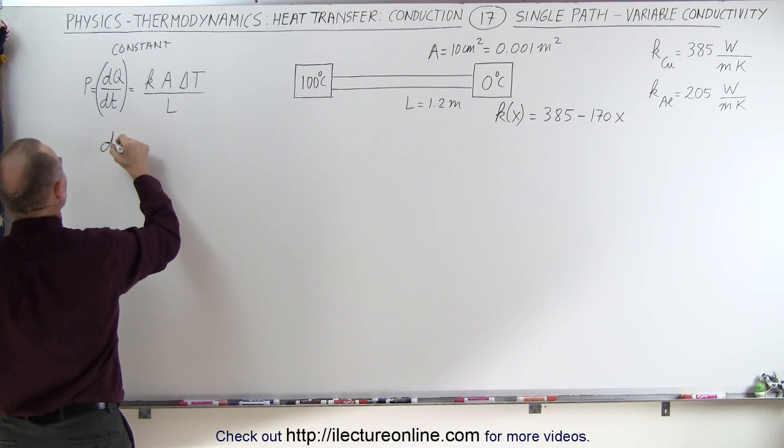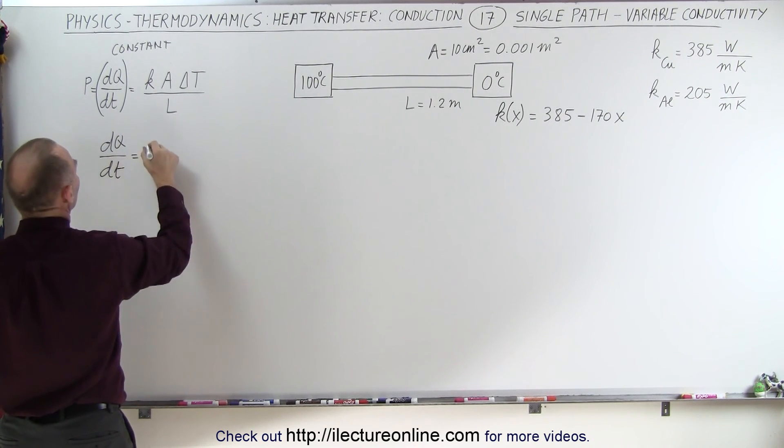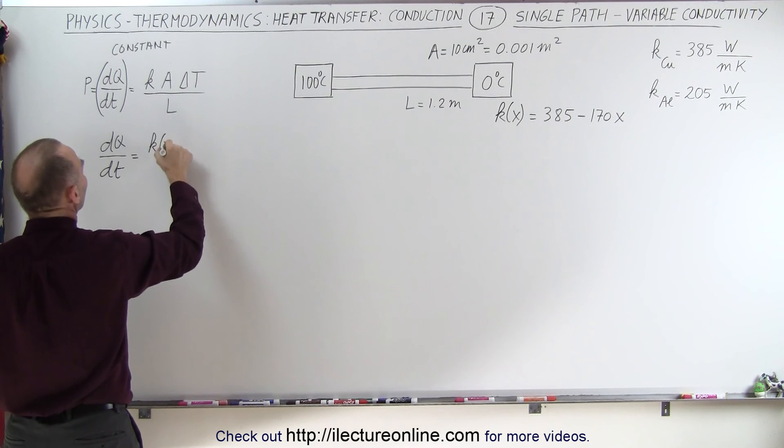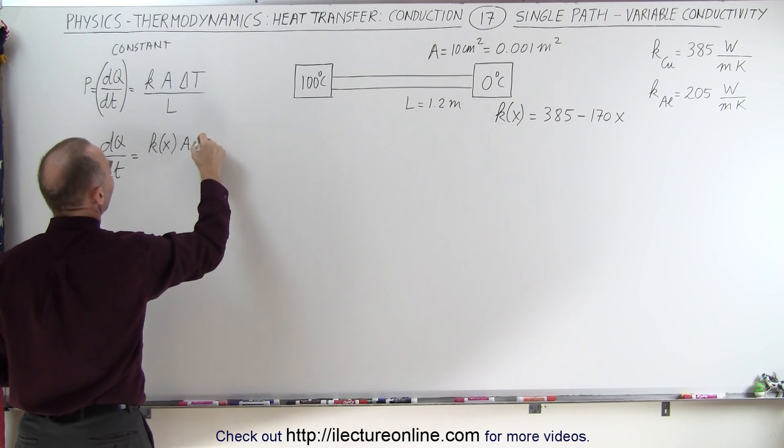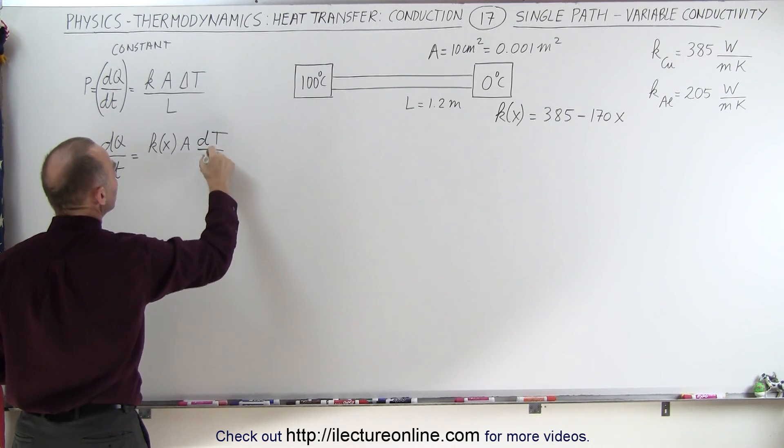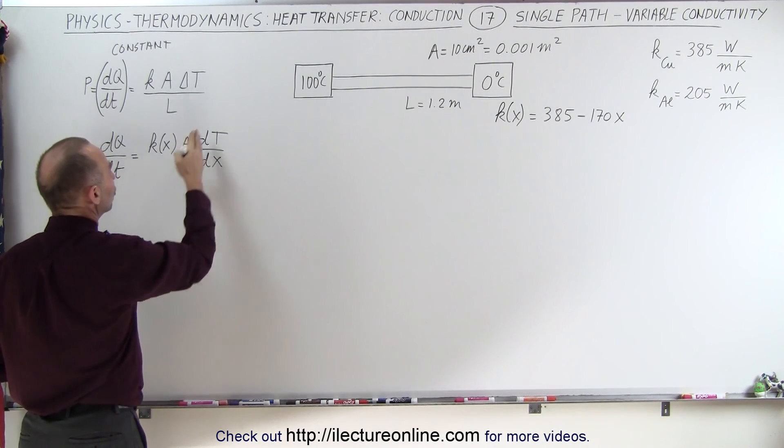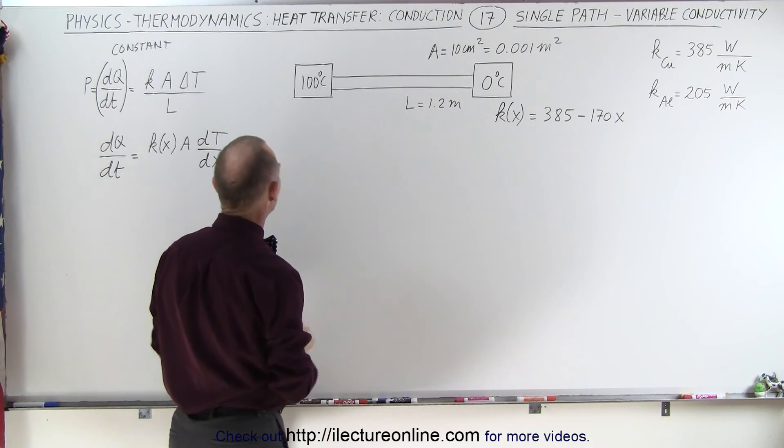dQ/dt is going to be equal to k, which is now a function of x, times the cross-sectional area, which is a constant, but times dT/dx, because it's going to change as a function of x.